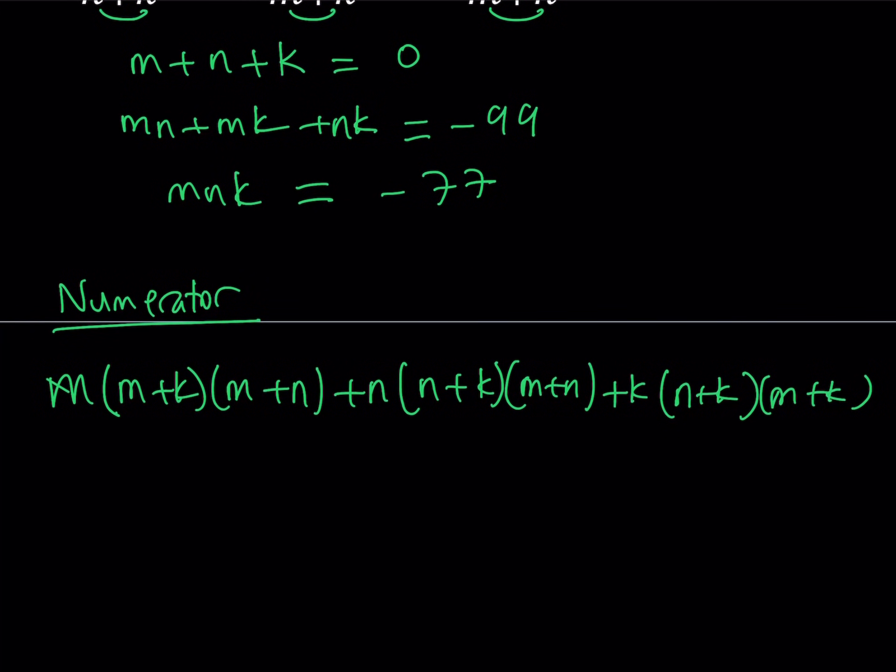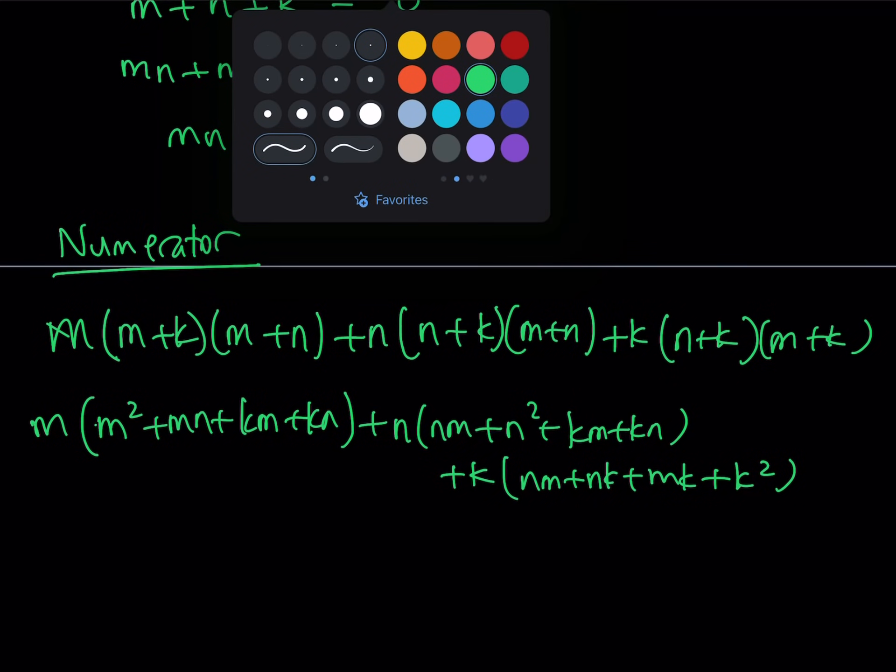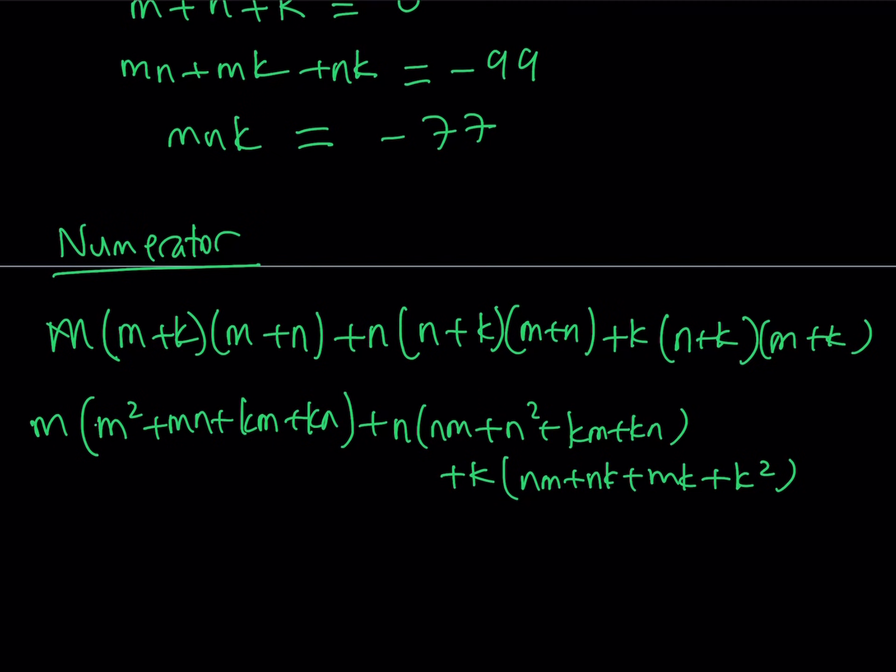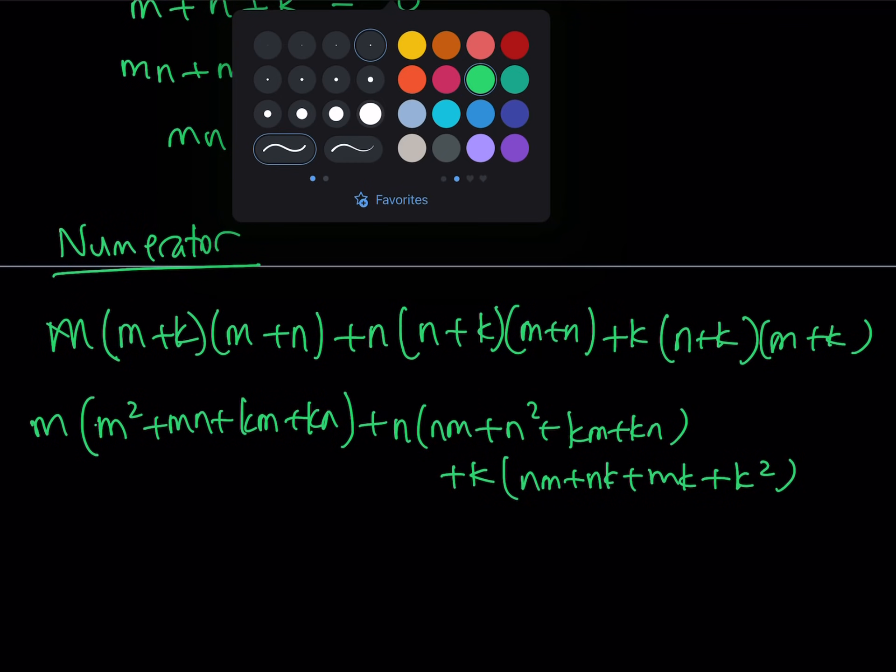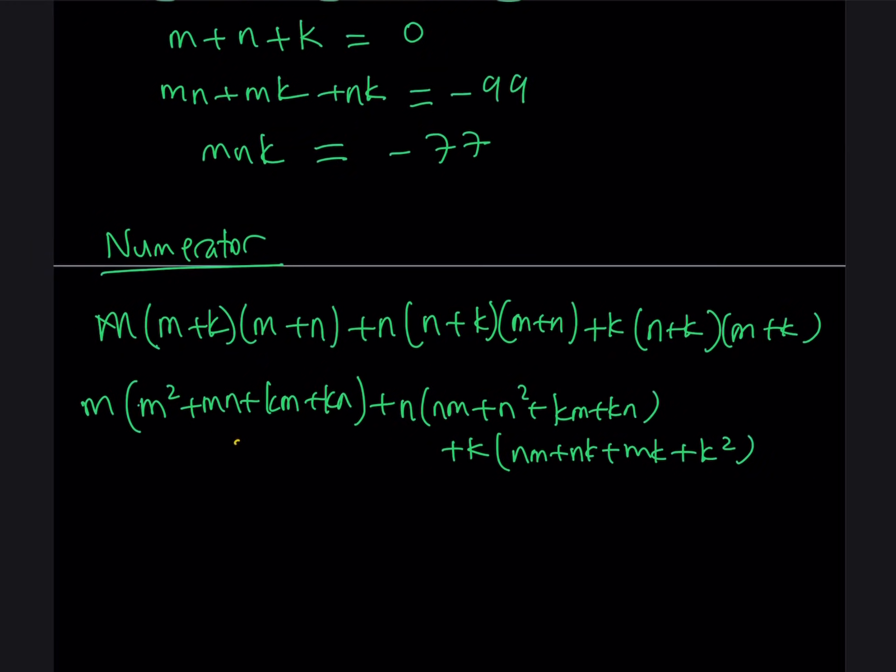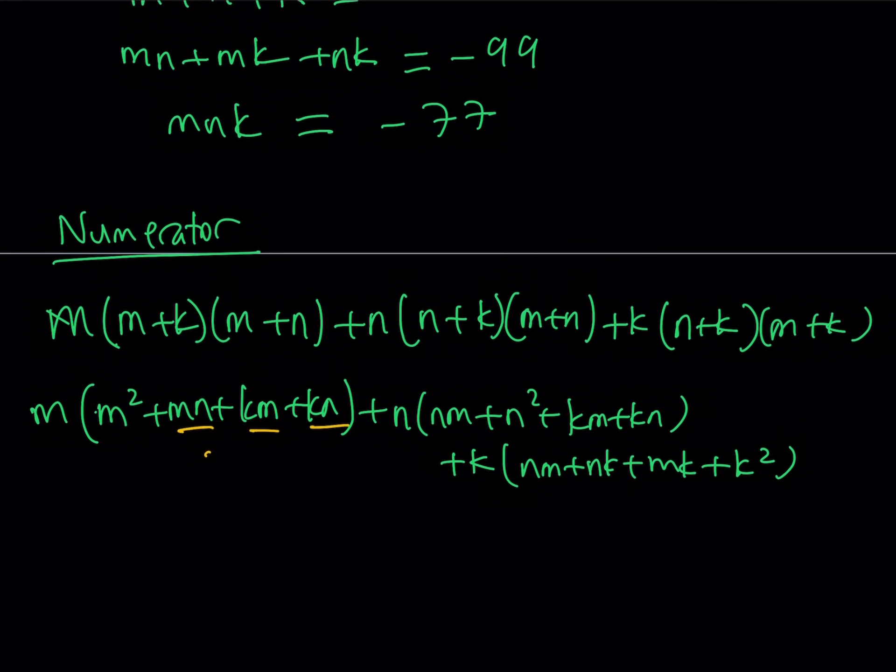Let's go ahead and simplify this first so you don't have to write the fraction every time. So when you distribute this expression, to keep a long story short, you're going to get something like this: M multiplied by M squared plus MN plus KM plus KN. And then we're going to get similar terms from here, like N will be multiplied by NM, N squared, KM, and KN. And then we're going to have the K being multiplied by NM and KM and K squared. Now notice that we are getting the same terms here. So some of these terms are going to repeat.